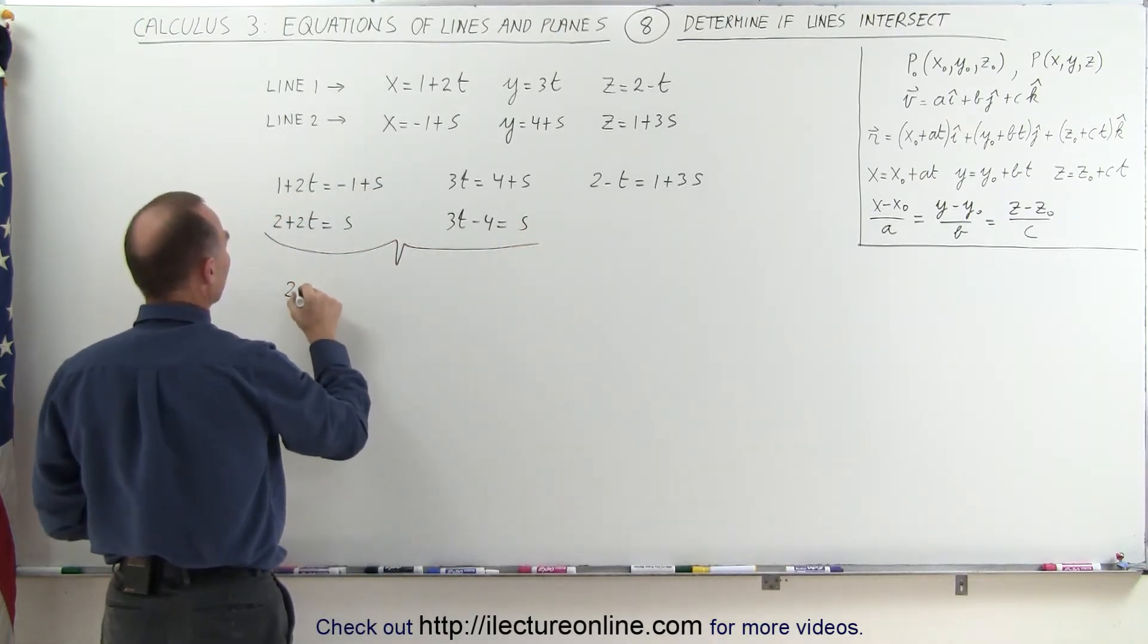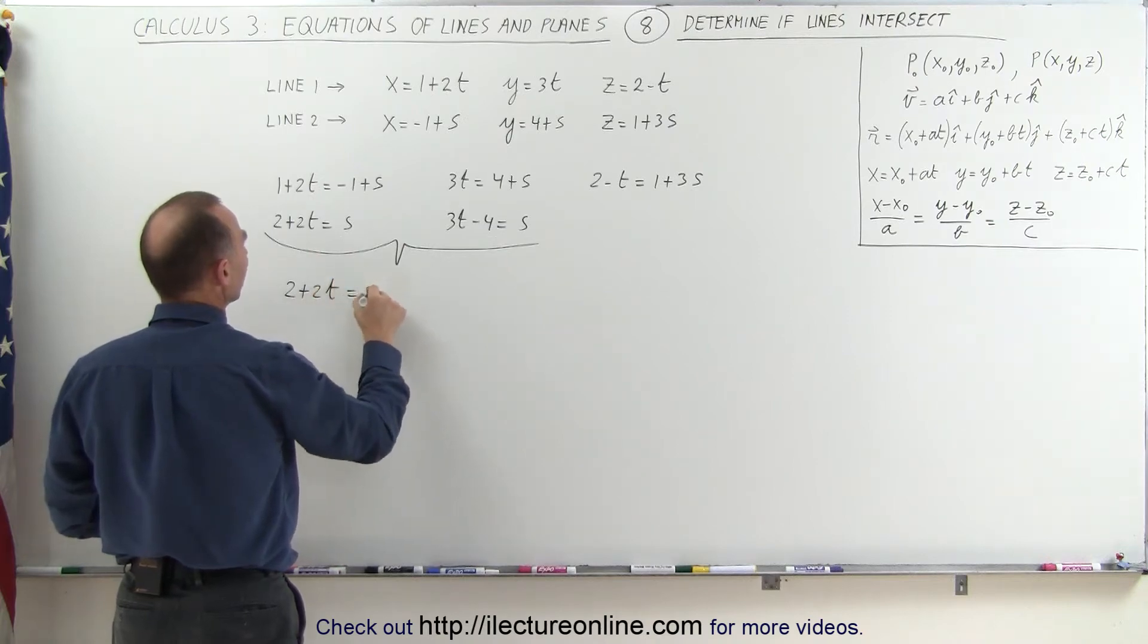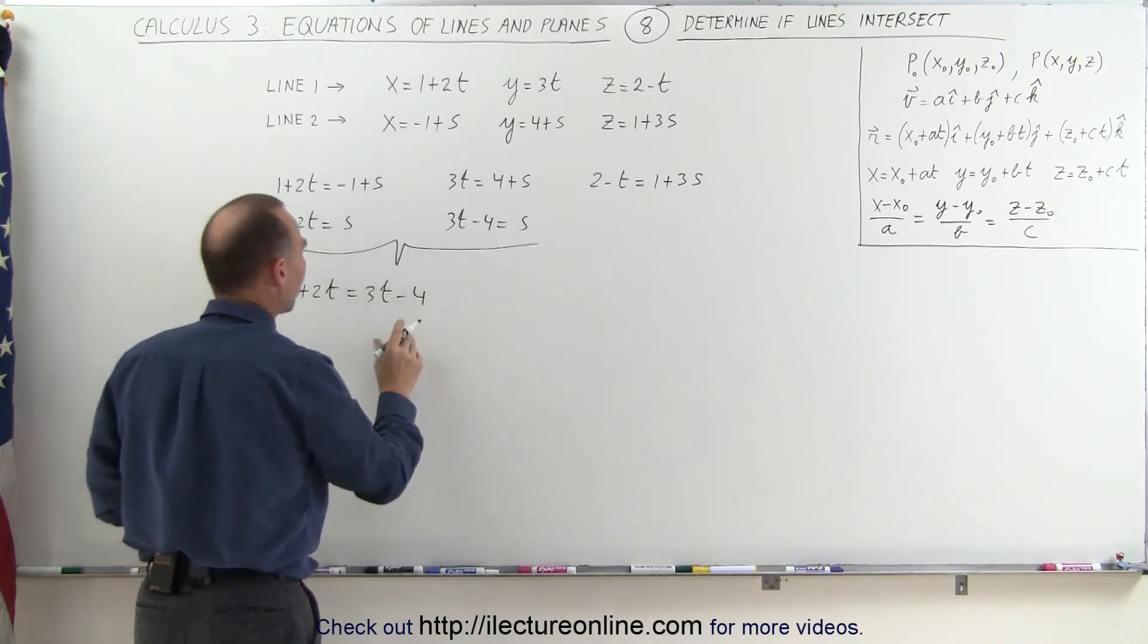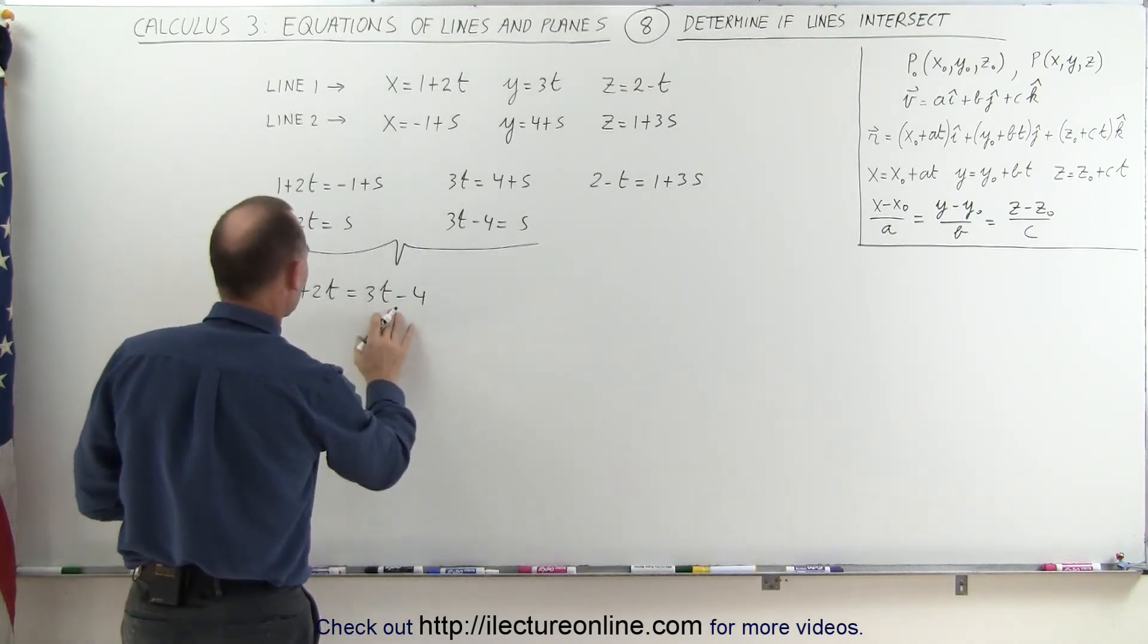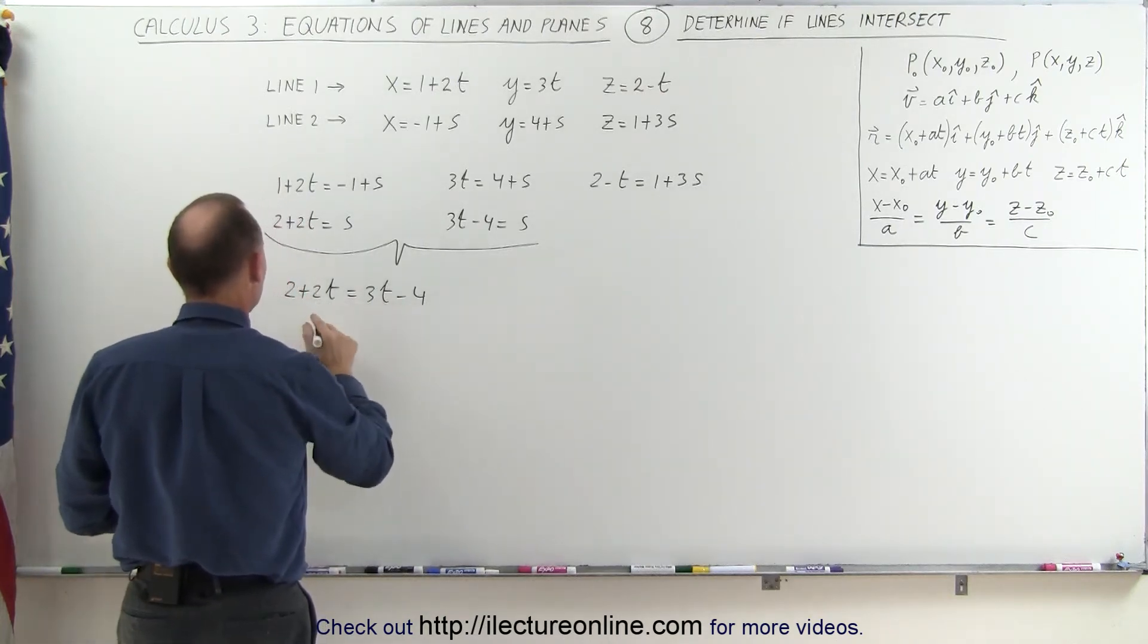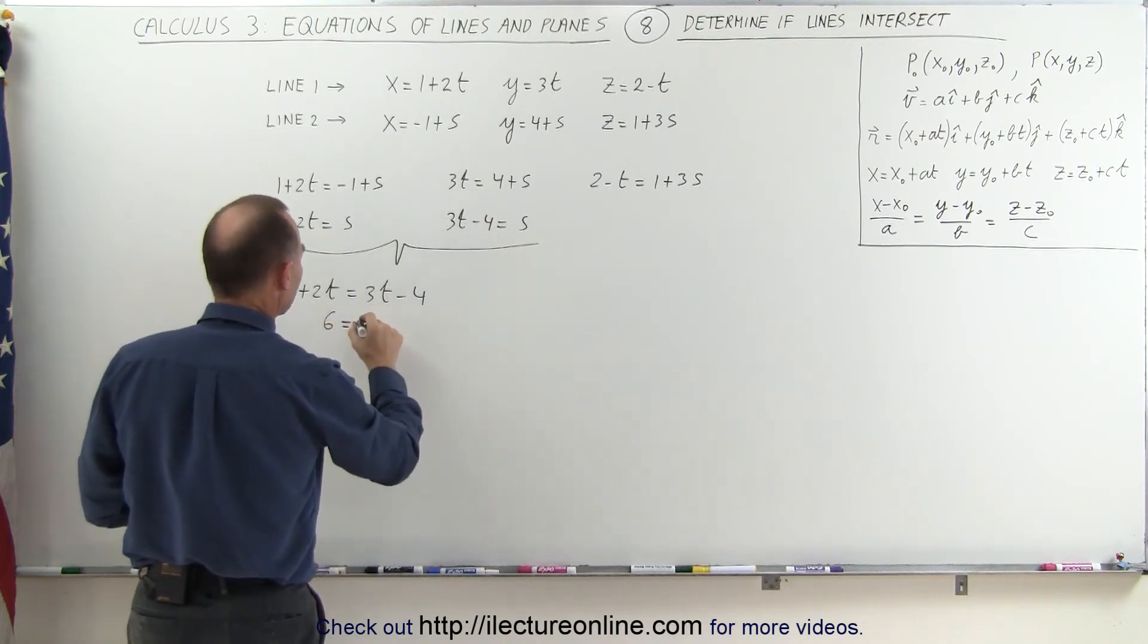If I now combine these two equations, I can now say that 2 plus 2t equals 3t minus 4, and I can solve this equation for t. Moving everything over to one side, the t is on the right side, and the 4 over here, I get 2 plus 4 is 6, equals 2t subtract from 3t gives me t.